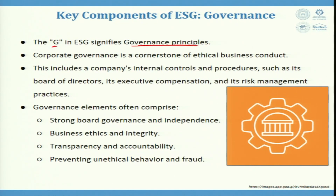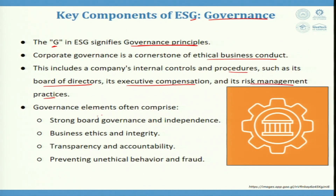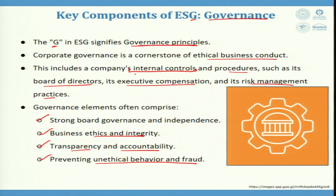This decision was taken by G — Governance — specifically the government of the state of Uttar Pradesh. Corporate governance is a cornerstone of ethical business conduct. It includes a company's internal controls, board of directors, executive compensation, and risk management practices. Governance elements comprise strong board governance and independence, business ethics and integrity, transparency and accountability, and preventing unethical behaviour and fraud. Regulatory systems also play a big role, as regulatory compliances must be followed.